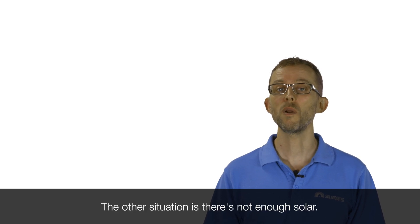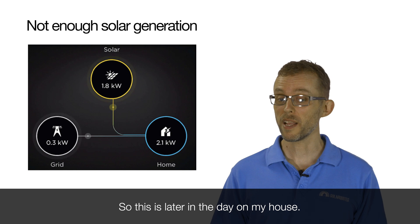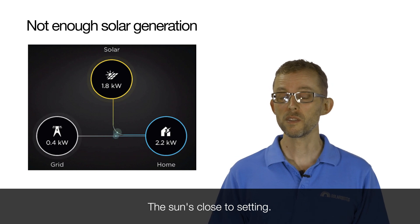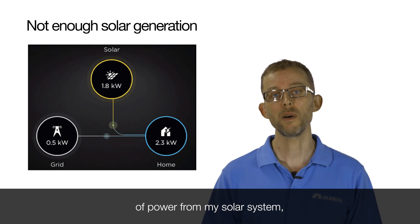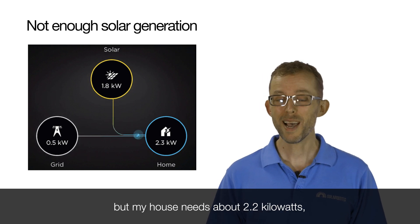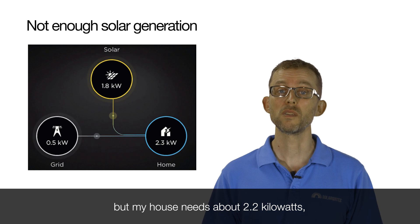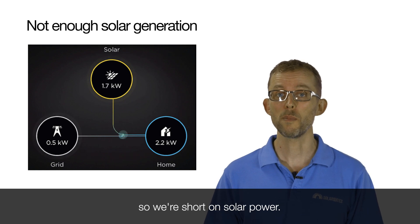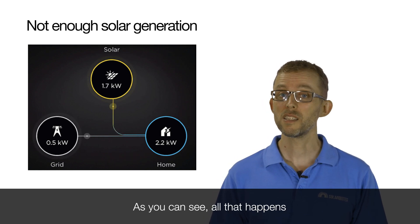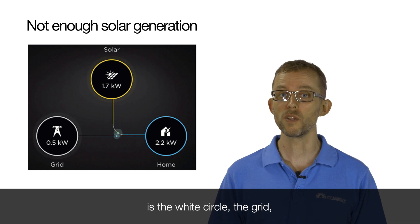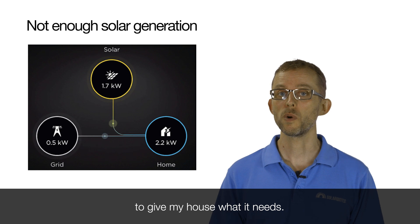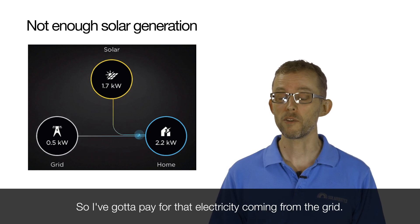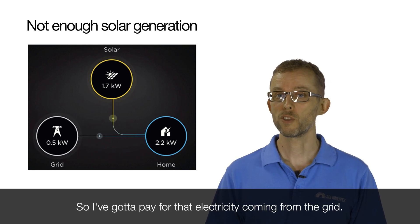The other situation is there's not enough solar. This is later in the day on my house. The sun's close to setting, and I'm only producing about 1.7 kilowatts of power from my solar system. But my house needs about 2.2 kilowatts, so we're short on solar power. As you can see, the grid - the white circle - tops up the solar in real time to give my house what it needs. So I've got to pay for that electricity coming from the grid.